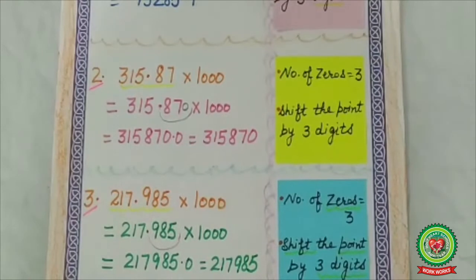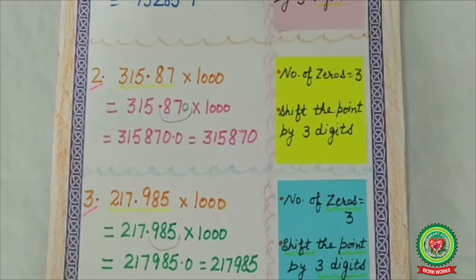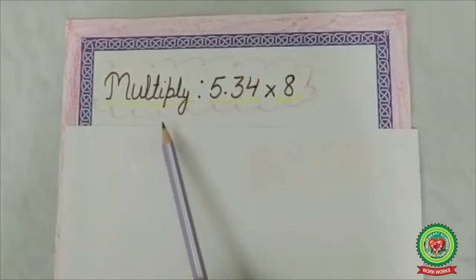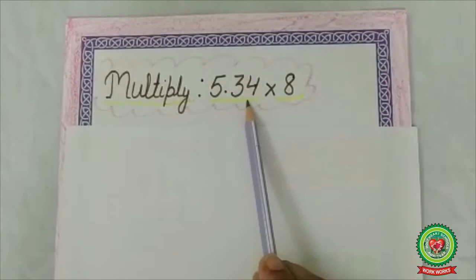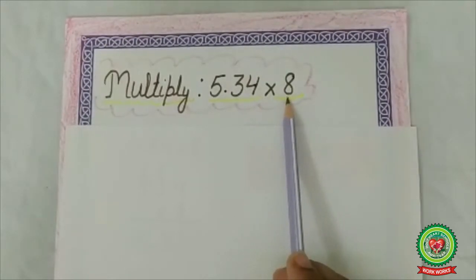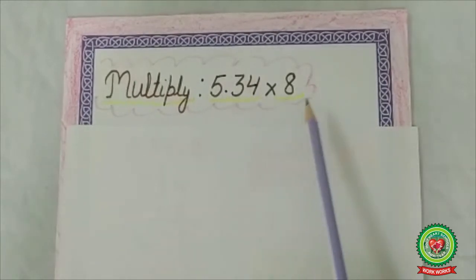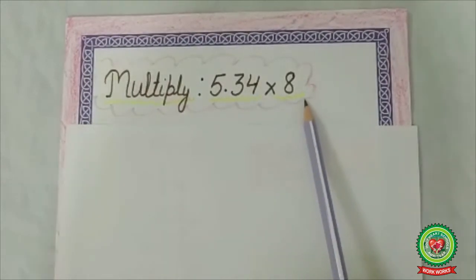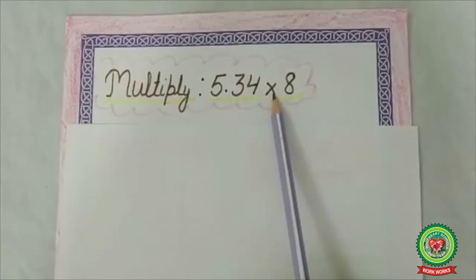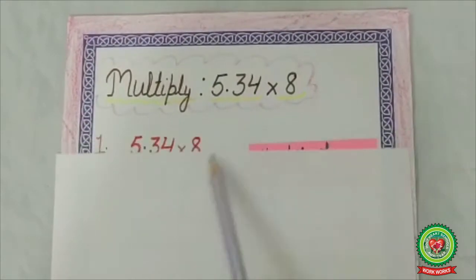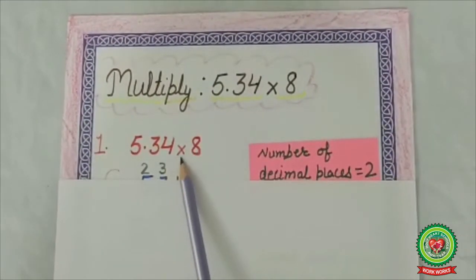Students, I hope you have understood how to multiply a decimal number by 10, 100, and 1000. Now we will learn to multiply a decimal number by a whole number. Example: multiply 5.34 by 8. Here 5.34 is a decimal number and 8 is a whole number.